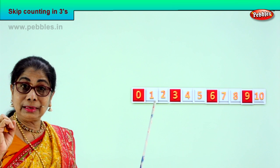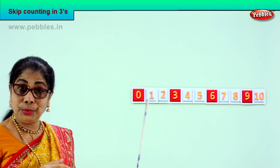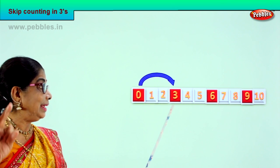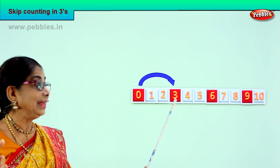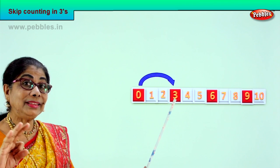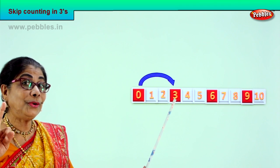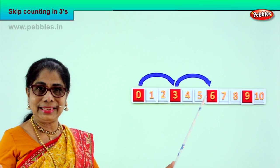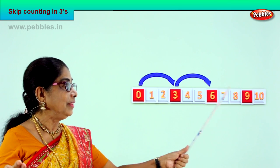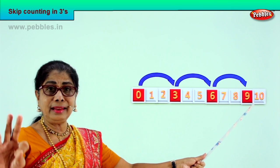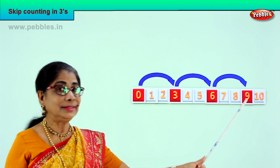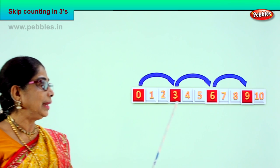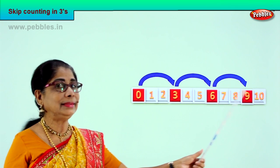0, 1, 2, 3. After 3 — 4, 5, 6. After 6 — 7, 8, 9. So: 0, 3, 6, 9.